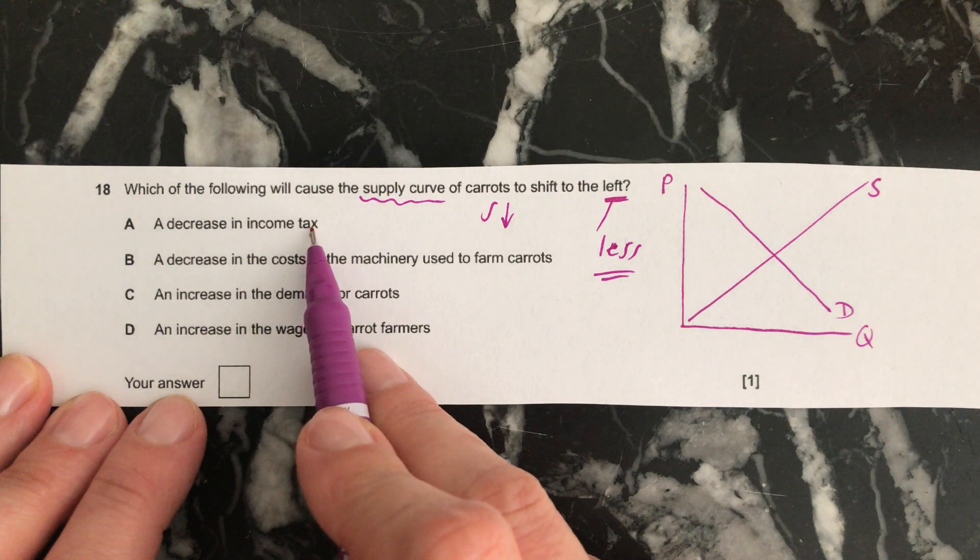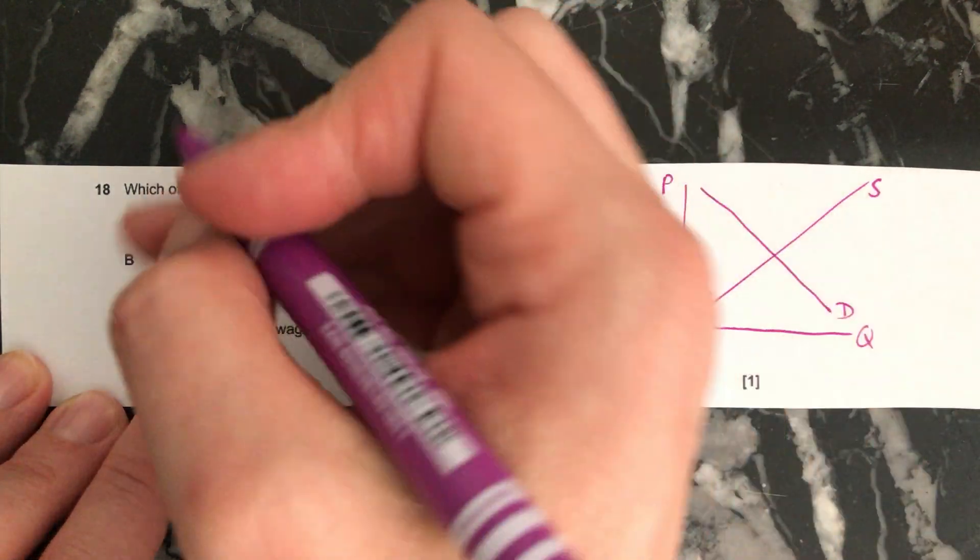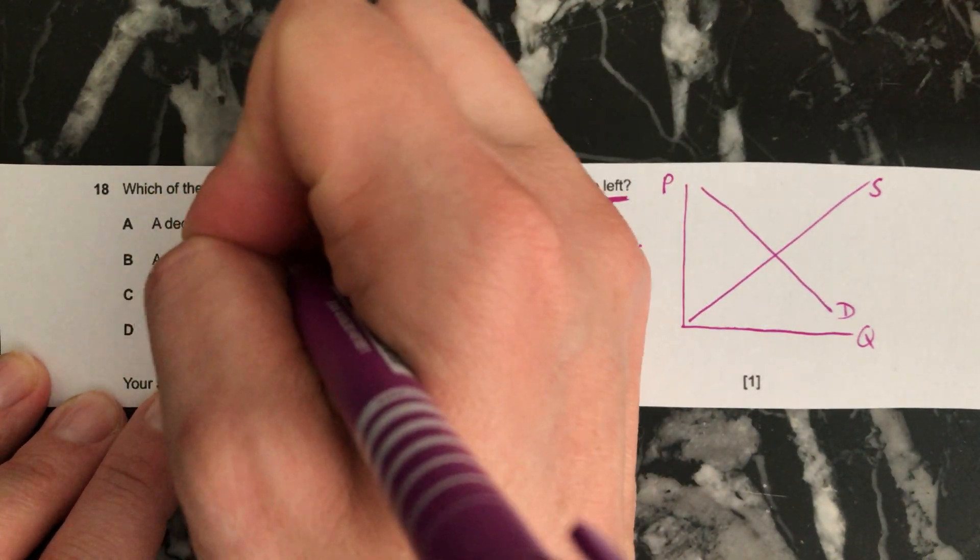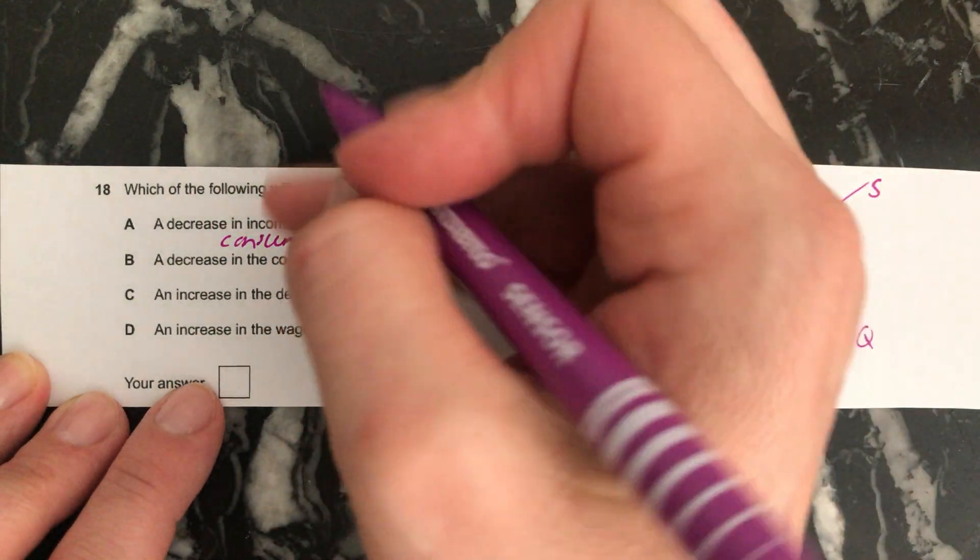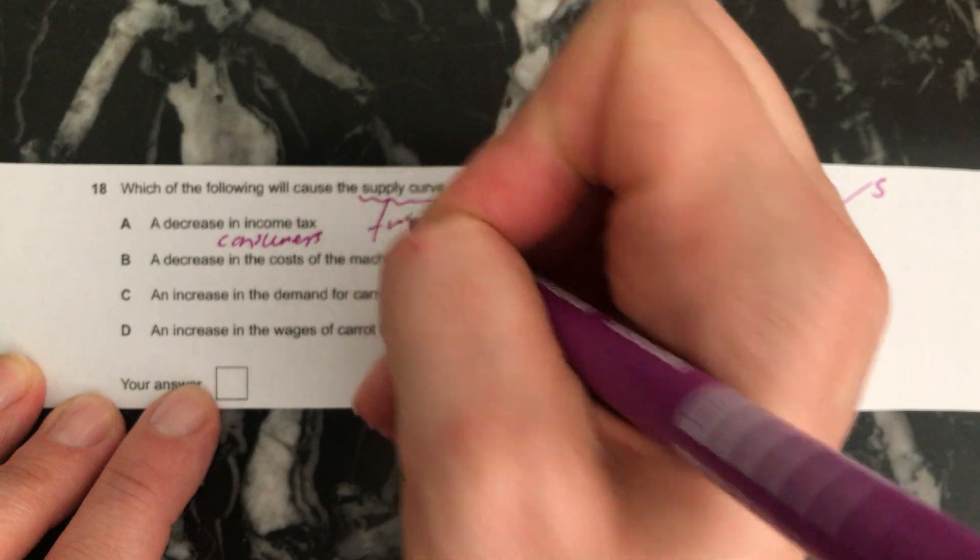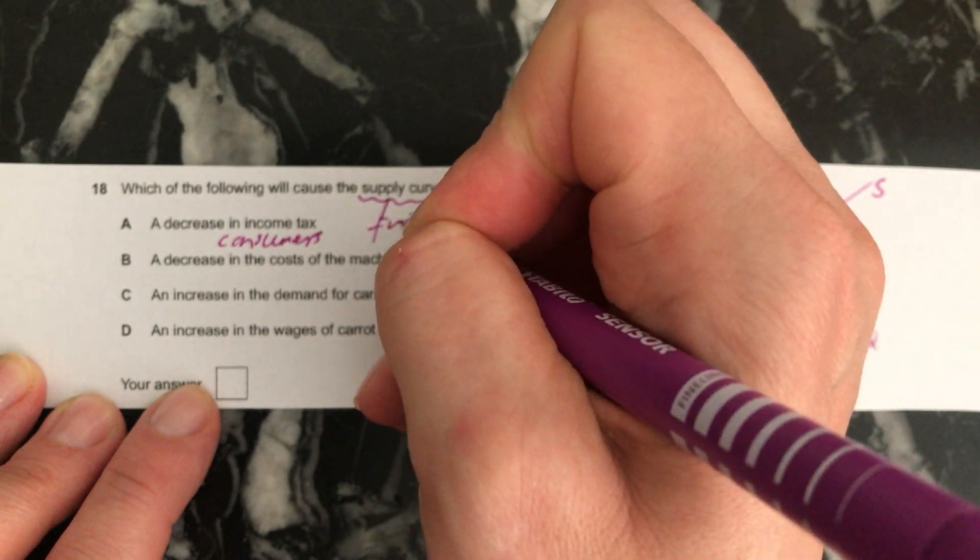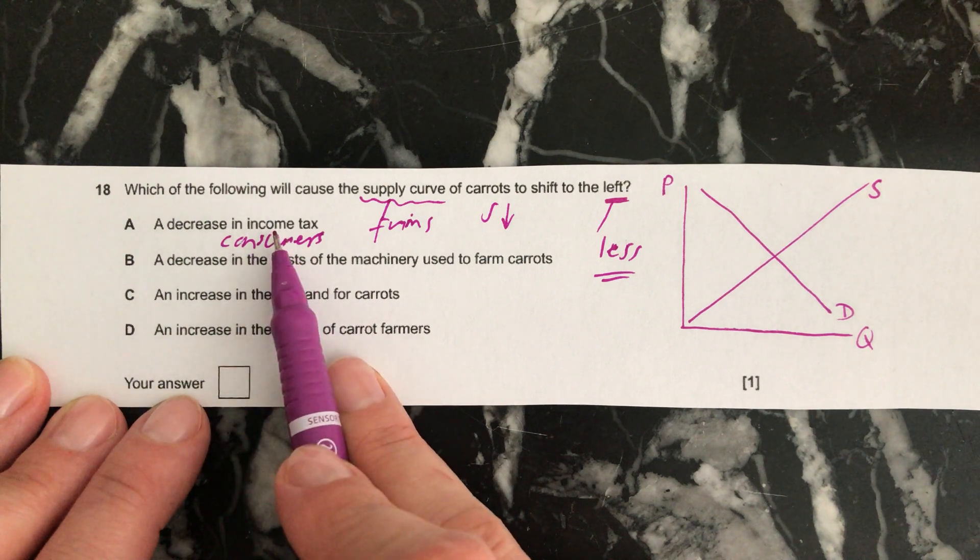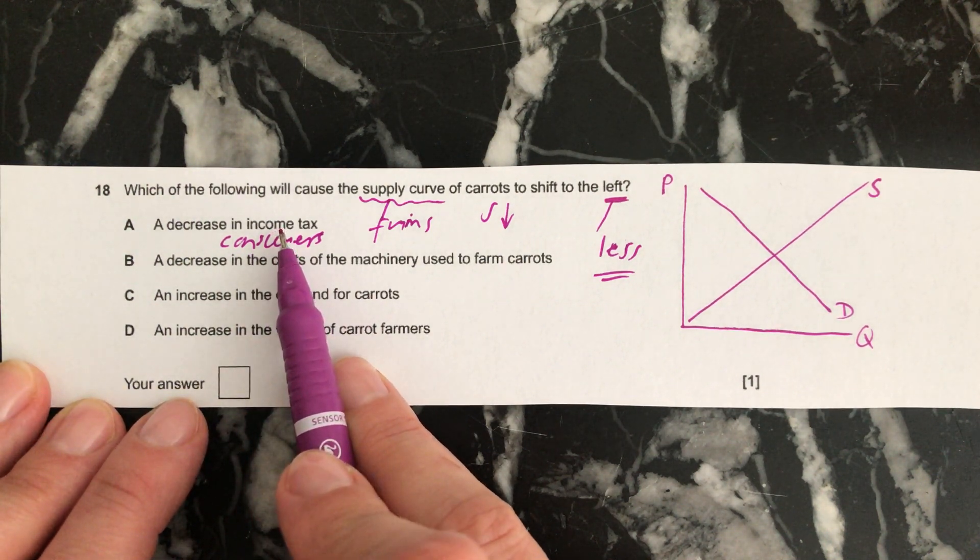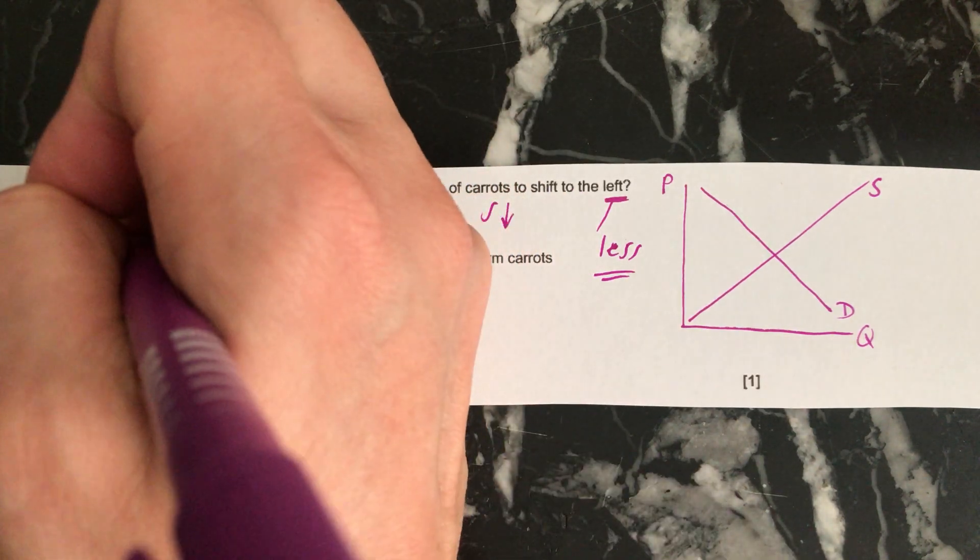So a decrease in income tax. Income tax is paid by consumers. It's nothing to do with firms. Remember, it's firms that supply things. So this is about consumers. If they pay less income tax, then they will be able to buy more things, and it will likely increase demand. So this is not the answer.